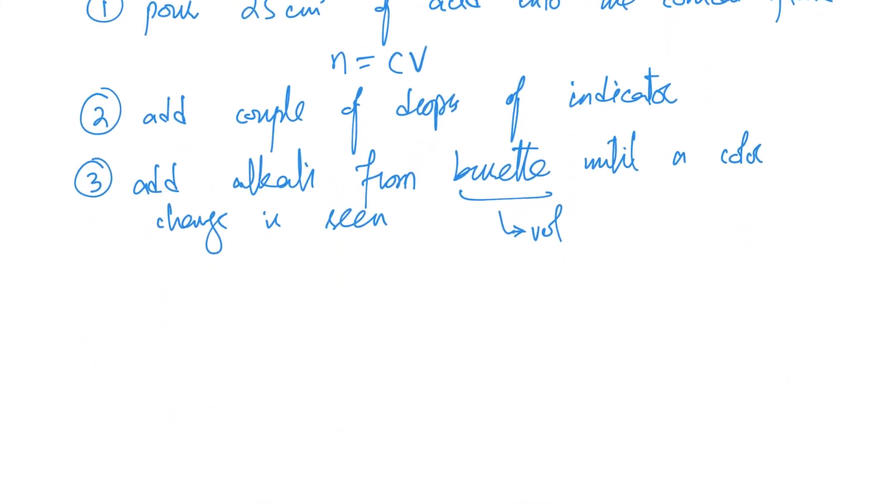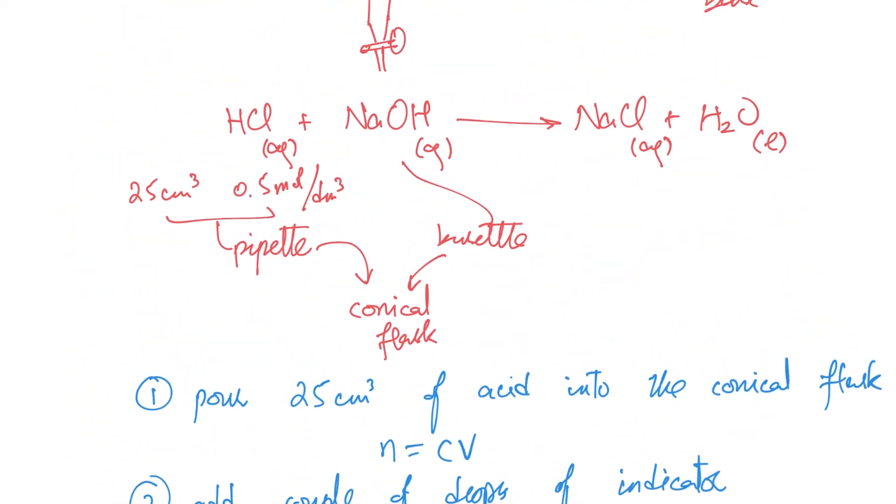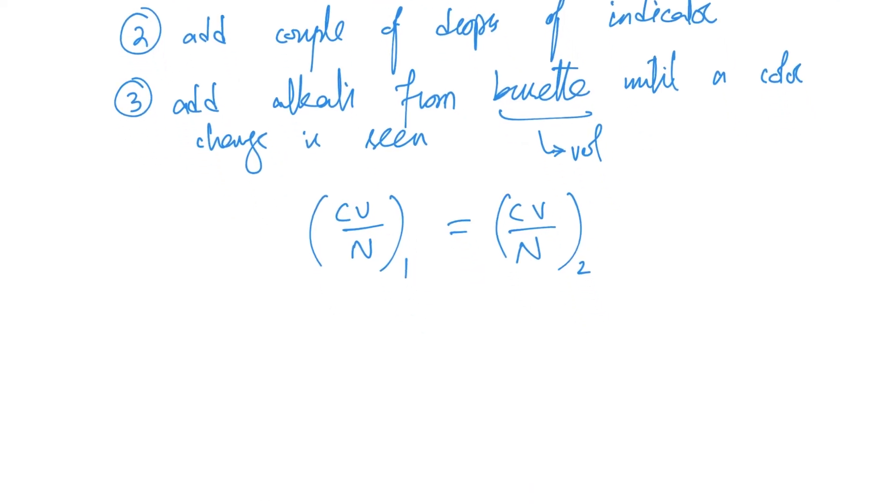Now I do not know the concentration, but the ratio method of the equation tells me that CV/N of the first solution equals CV/N of the second solution. This is a very straightforward, very useful shortcut, where one and two stand for one solution and the second solution. This capital N is the number of moles from the equation, the ratio from the equation.